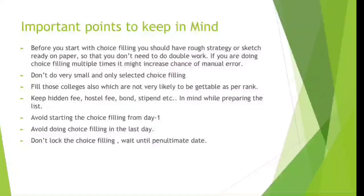Before you start, have a rough strategy ready, double check that you've done it correctly, and discuss with friends. Don't allow yourself to do the same work twice as it creates high chances of manual error. Also, don't do very small or very selective choice filling. If your rank is 10,000 and you're going for General Surgery but think you have no chance for General Medicine, don't skip it — fill General Medicine too because that's less probable but luck plays a role. Fill colleges that are less likely as per your rank, and make sure you check hidden fees, bond, and stipend before doing the choice filling.